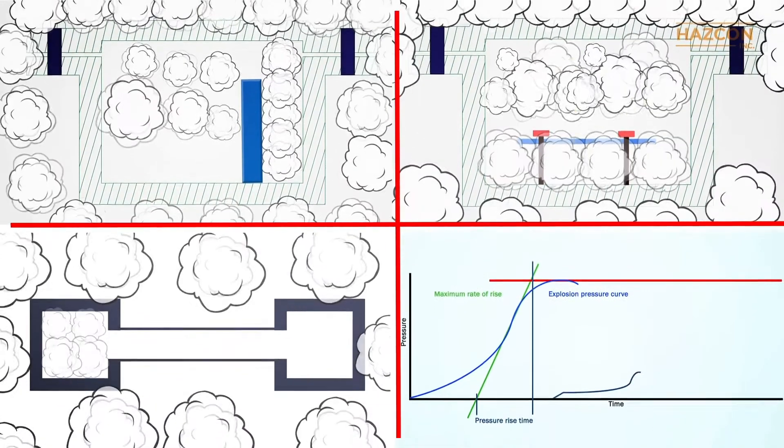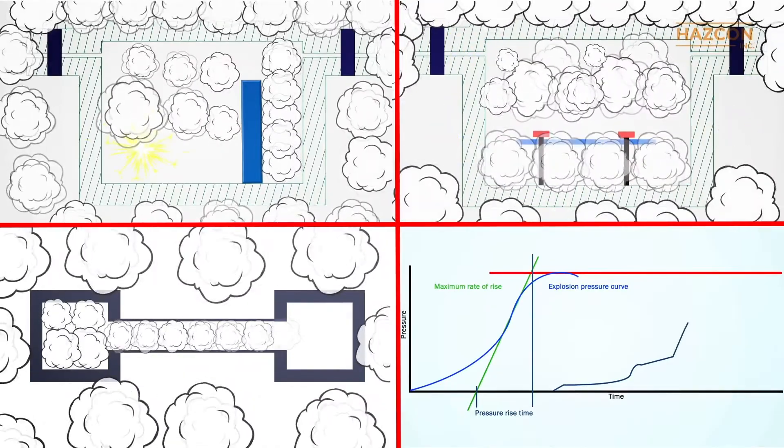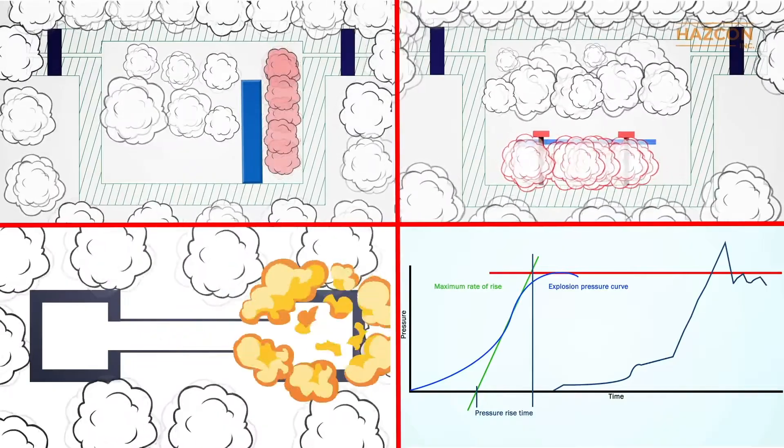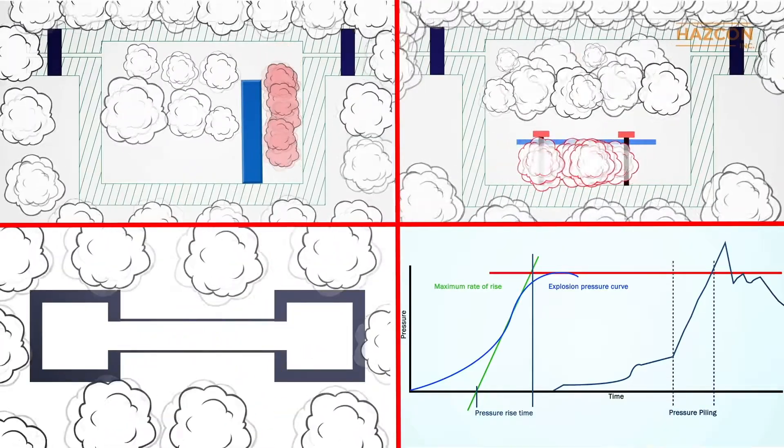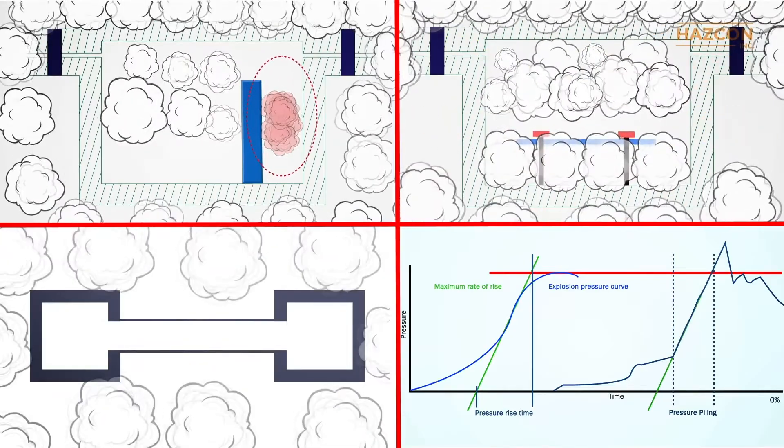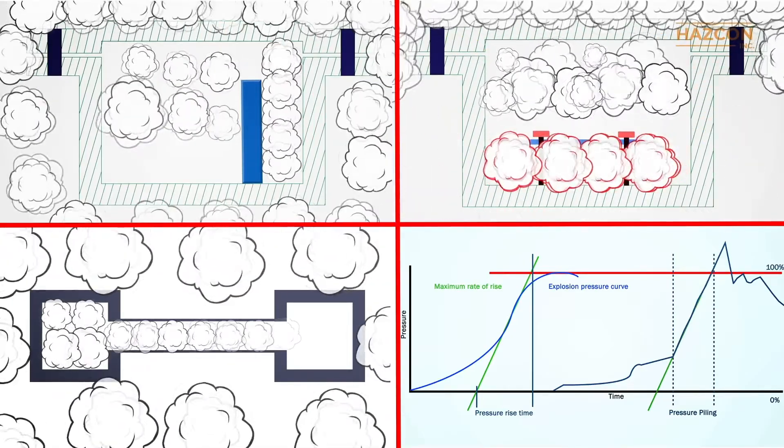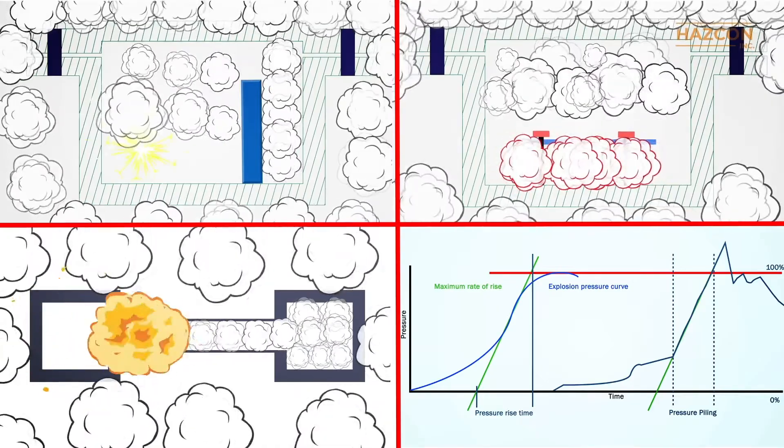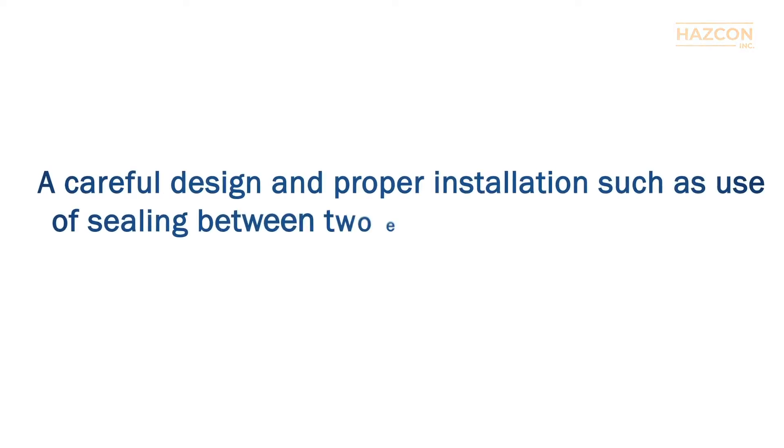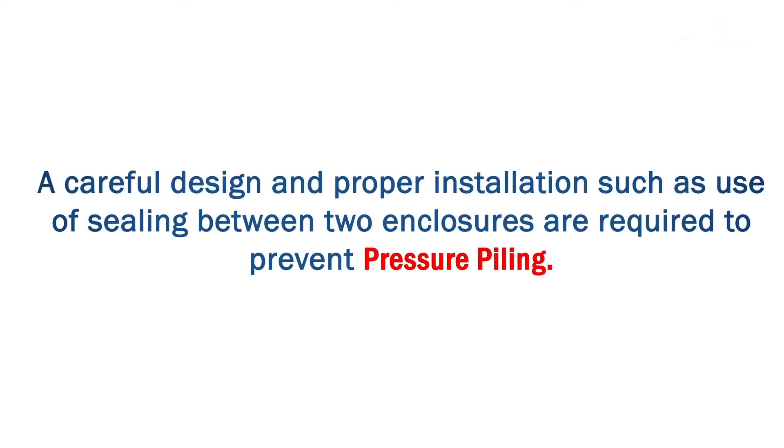In summary, we should remember that pressure piling results when gases become highly pressurized through compression, and when unburned gas pushed into a cavity becomes highly pressurized before being ignited. As a result, pressure piling leads to pressure that is higher than the expected peak pressure as a result of an explosion. Given such increased pressure, enclosures and piping systems might be unable to withstand the impact of an explosion. A careful design and proper installation, such as use of sealing between two enclosures, are required to prevent pressure piling.